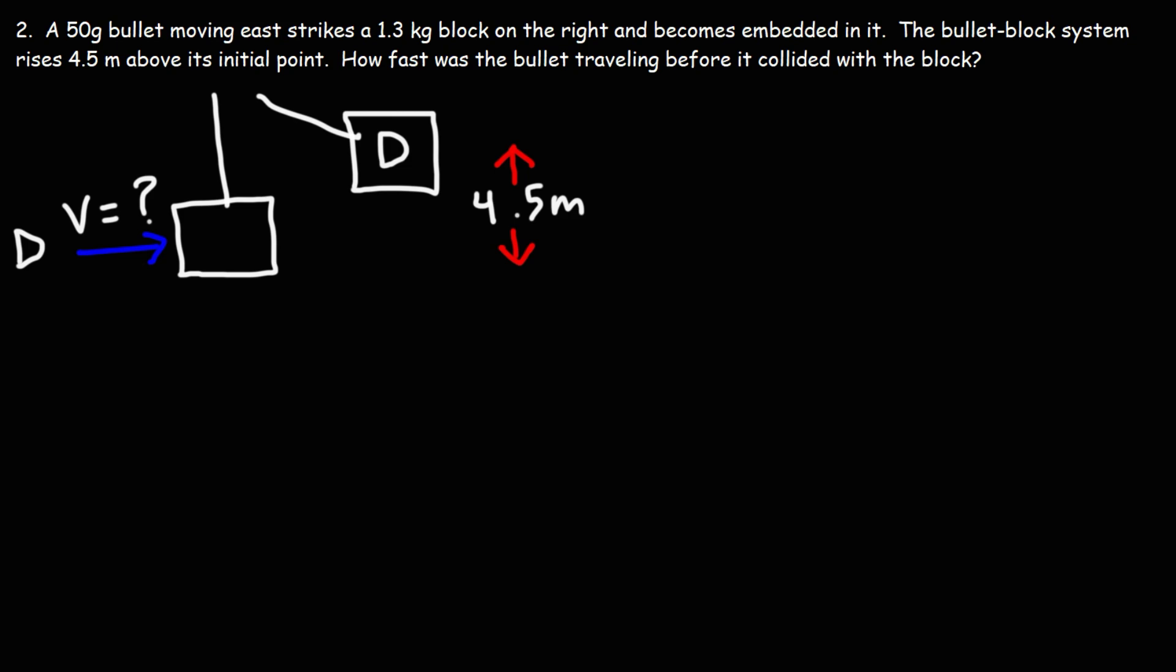So how can we do that? Well, here's another formula that we could use. The initial speed is going to be the sum of the two masses divided by the mass of the bullet, times the square root of 2gy, where y is the height of, or how much, the bullet-block system rises above its initial point. So this is y.